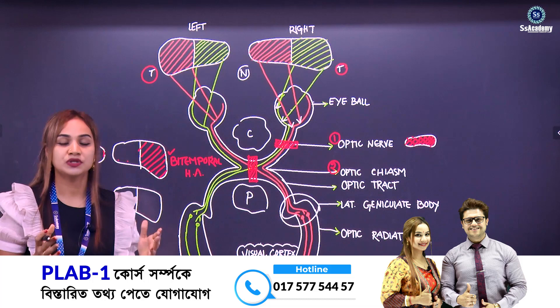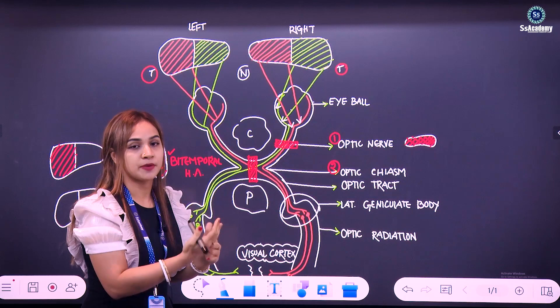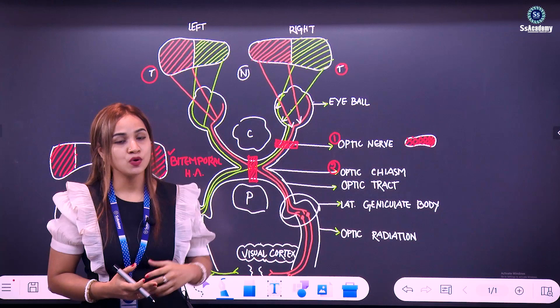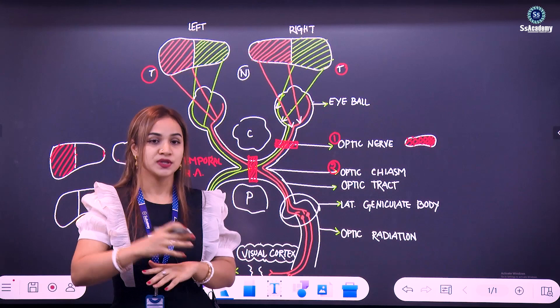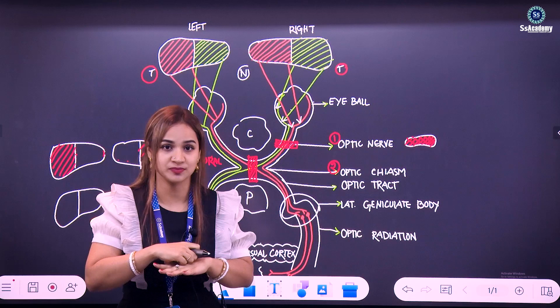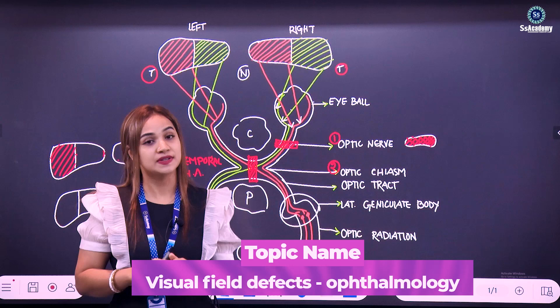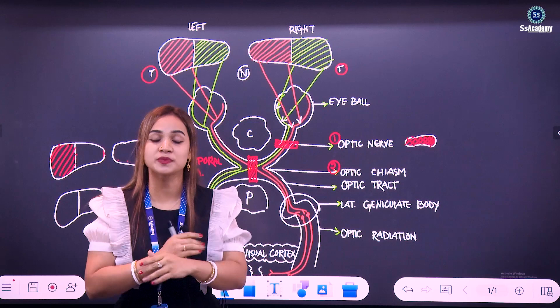Listen very carefully: this pituitary gland compressing the optic chiasm is actually compressing the inferior fibers of the optic chiasm, and the inferior fibers of the optic chiasm are actually responsible for the superior or upper field of vision. The craniopharyngioma is pressing the superior fibers of the optic chiasm, and the pituitary tumor is compressing the lower fibers of the optic chiasm. The upper fibers of the optic chiasm are responsible for the lower field of vision, and the lower fibers are responsible for the upper field of vision.